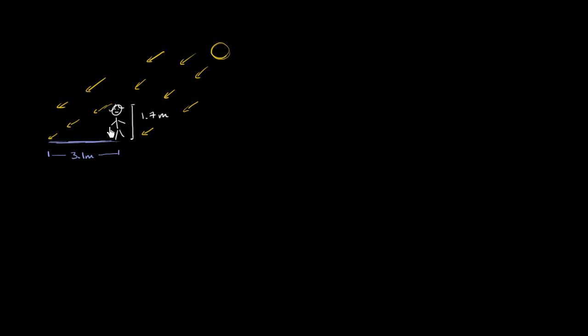So we have this girl right over here. She is 1.7 meters tall and she's standing in the sun. The sun is at an angle with respect to the ground, and given where the sun is right now, her shadow is 3.1 meters long.